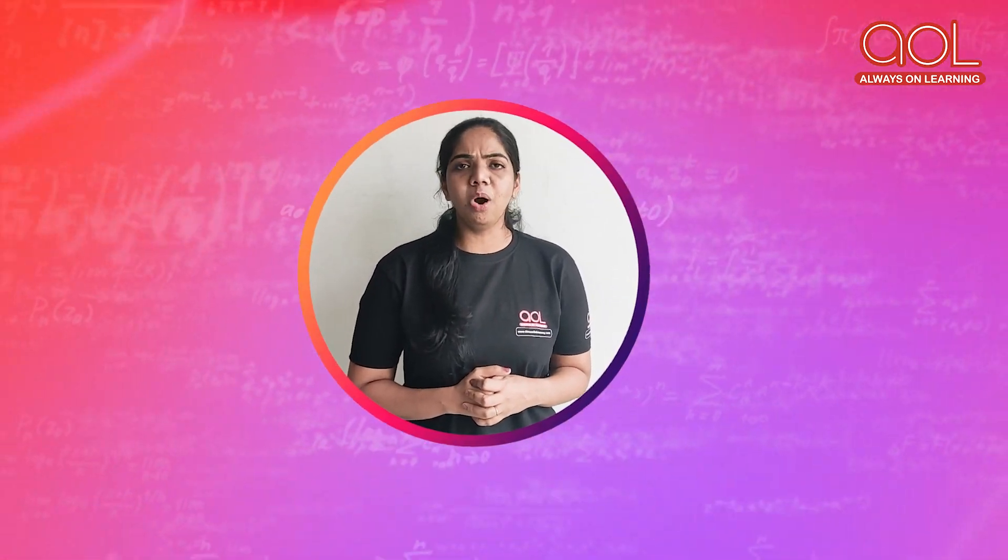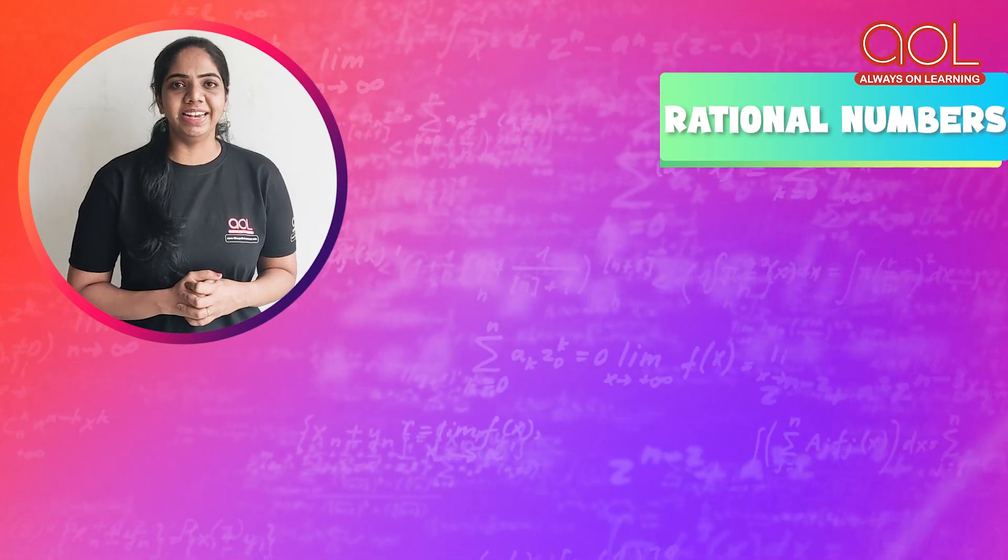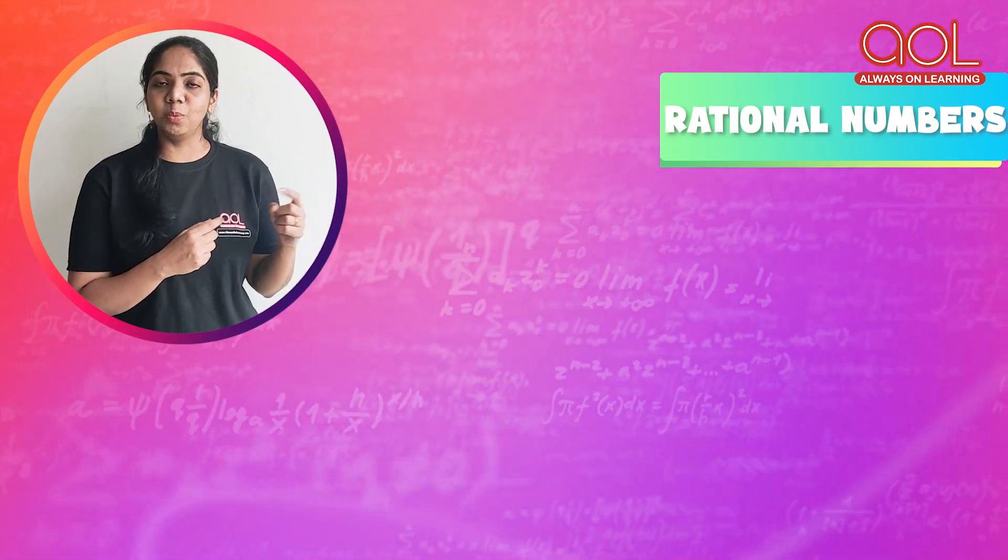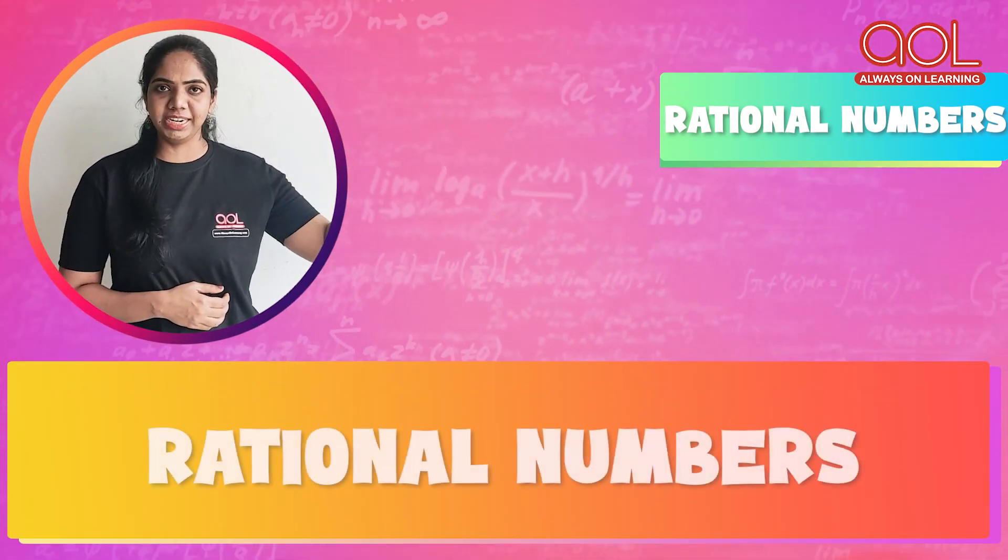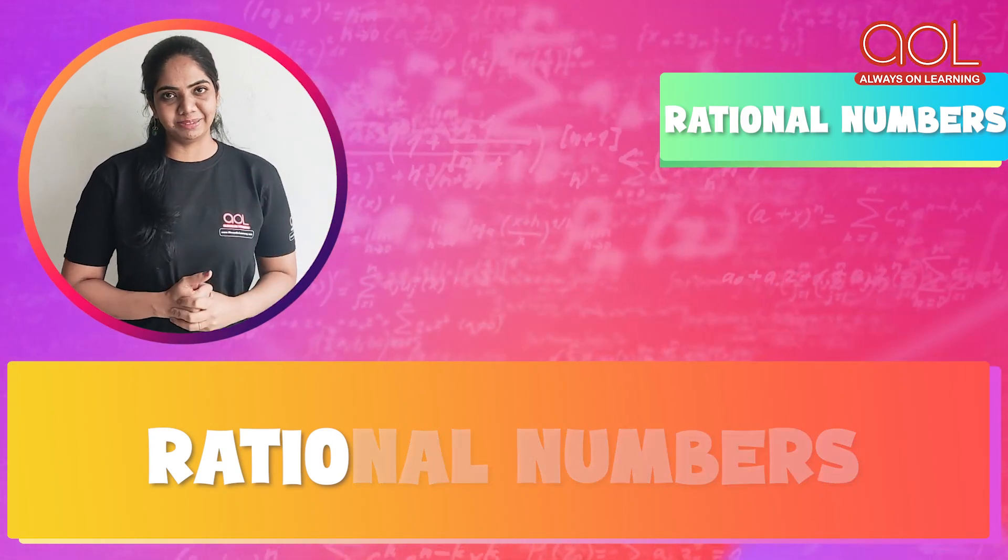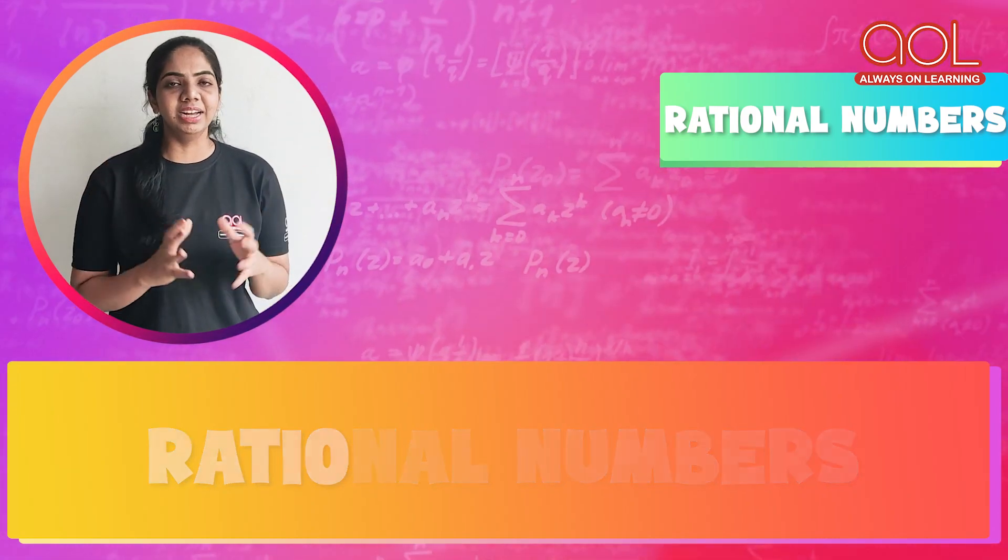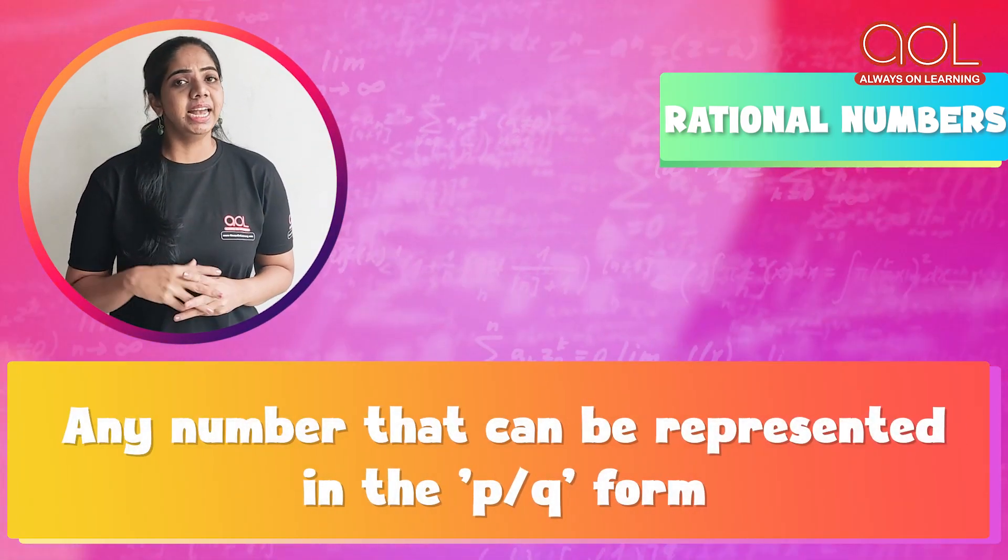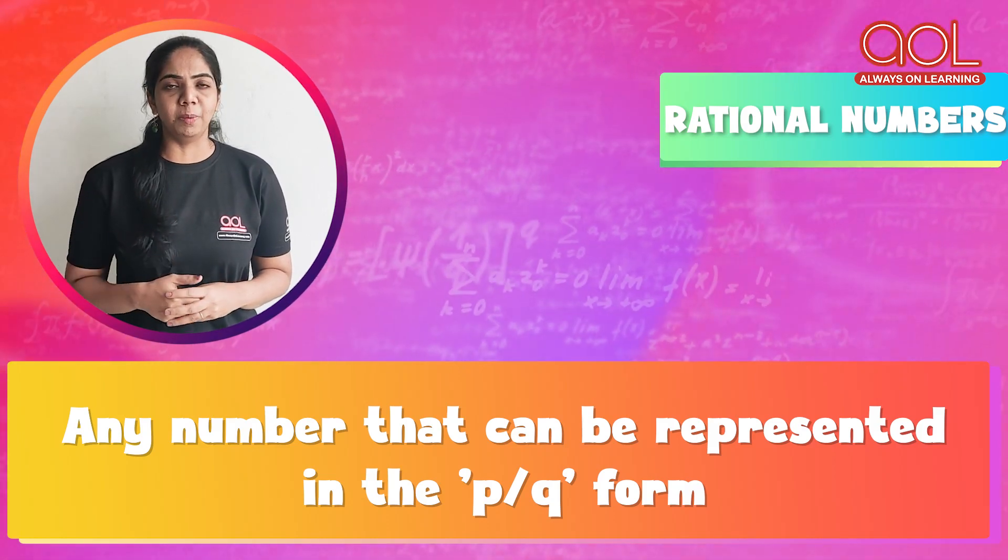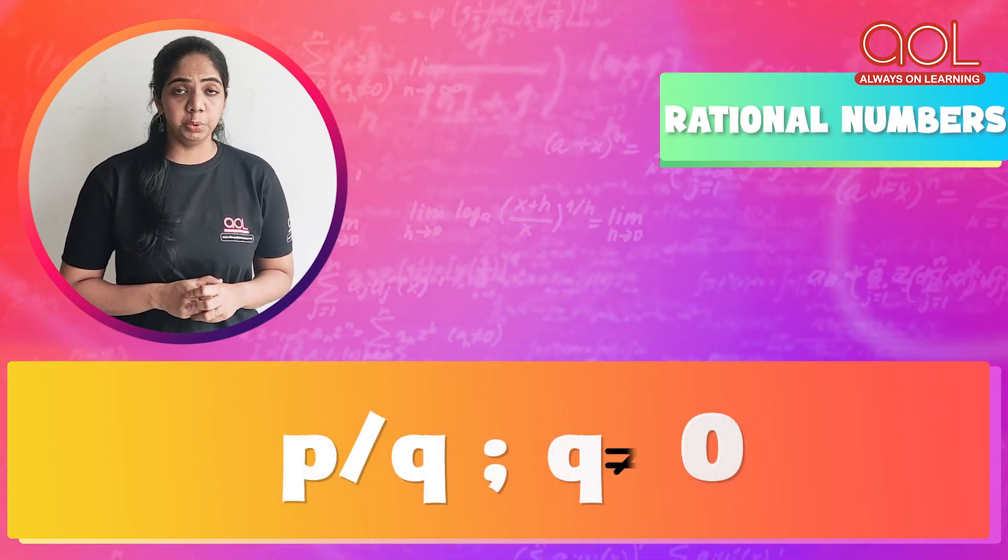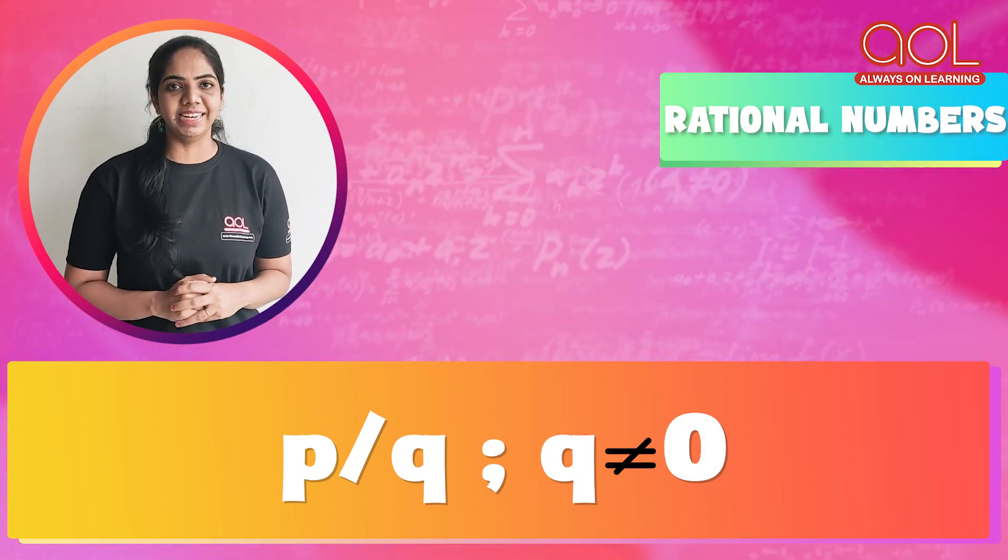What is a rational number? The answer lies in the word itself, rational number, ratios. Any number that can be expressed in a P by Q form is called a rational number, where Q is not equal to 0.